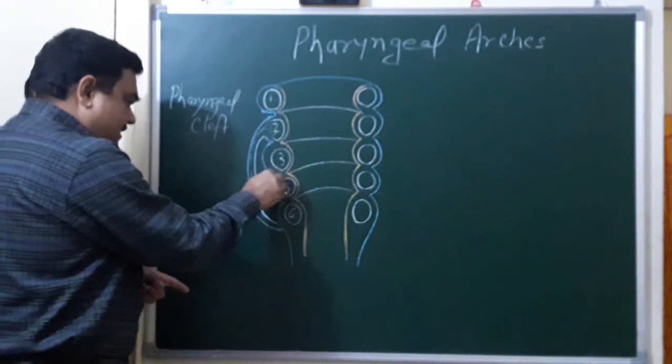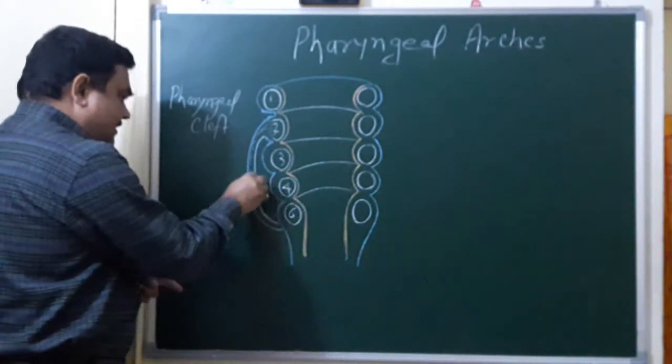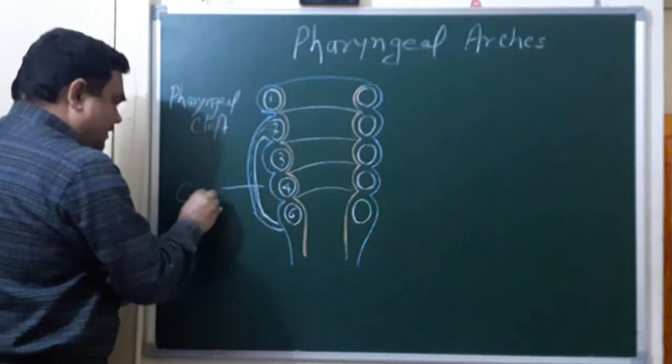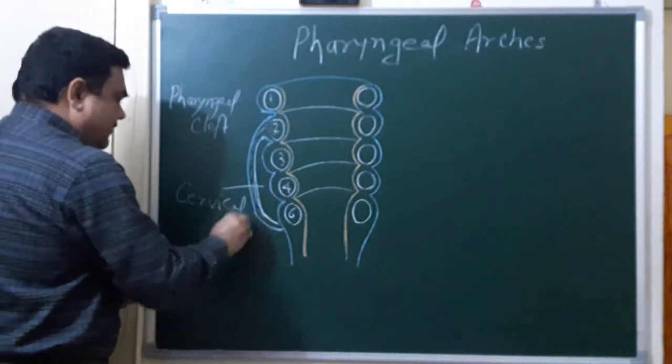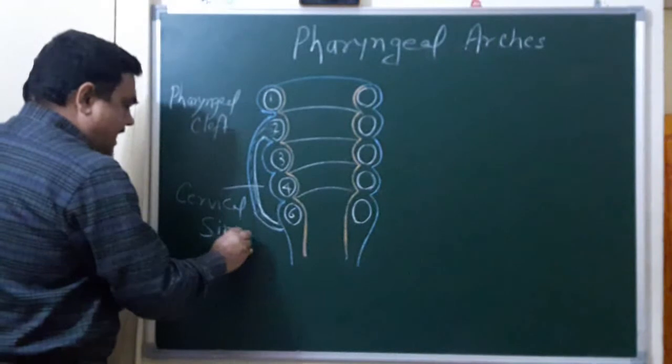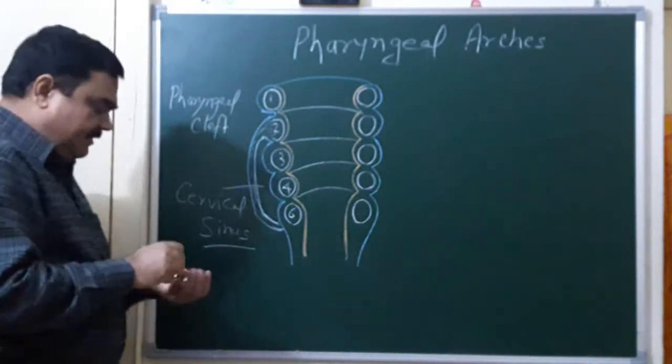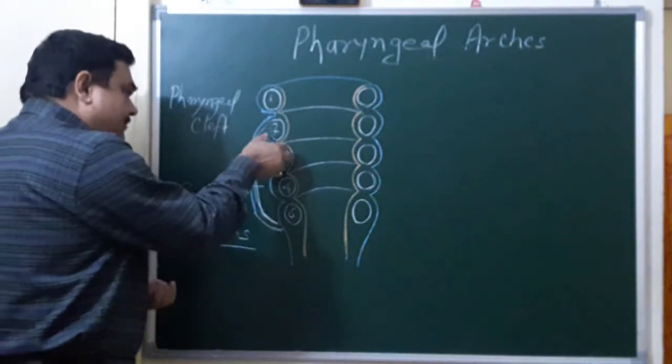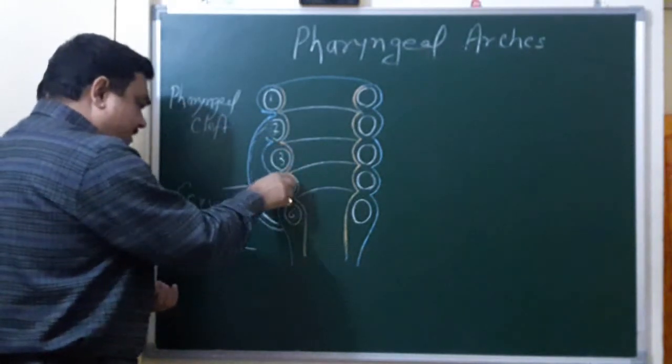This is known as, this part is known as cervical sinus. This is cervical sinus. After some time this cervical sinus becomes obliterated. This becomes obliterated.